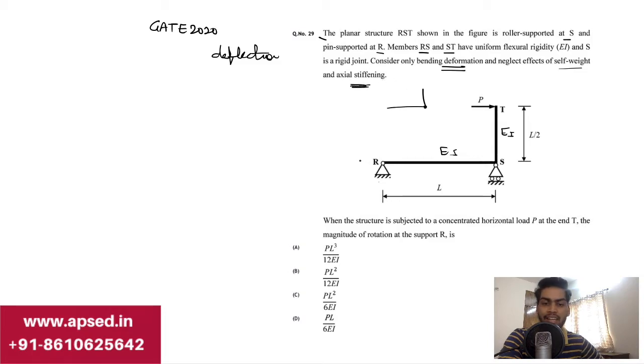When the structure is subjected to a concentrated horizontal load at T, a load P is applied at this point T. The magnitude of rotation at support R is to be found. Now if we simply look at this question, it might look very difficult and complicated.